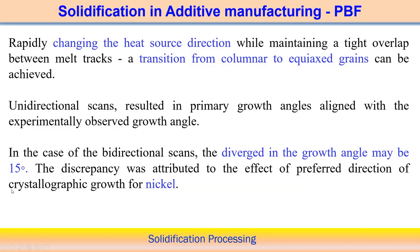If there is a rapid change in the heat source direction, continuously changing direction while maintaining tight overlap between melt tracks, then a transition from columnar to equiaxed grains is possible. It is interesting to explore how this transition can occur through understanding solidification behavior, because equiaxed grains enable near-homogeneous or isotropic mechanical properties in the component.